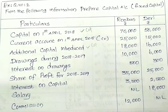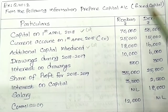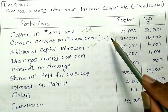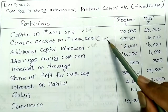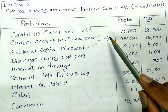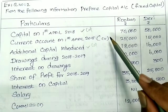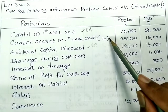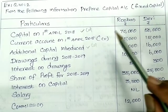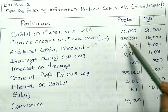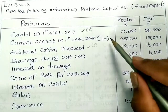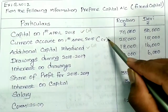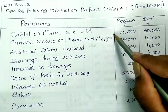The current account number is next. The current account opens on 1st April 2018. The current account opening balance is on the credit side: 25,000 and 15,000 on the credit side.